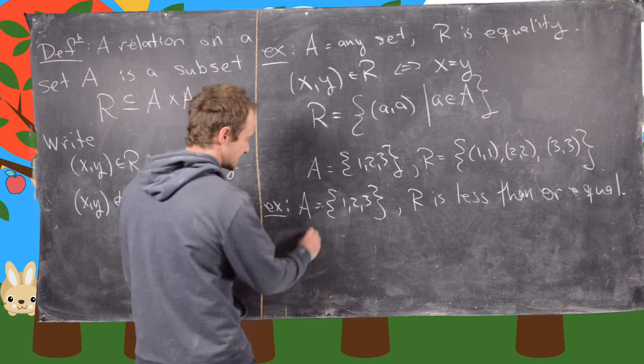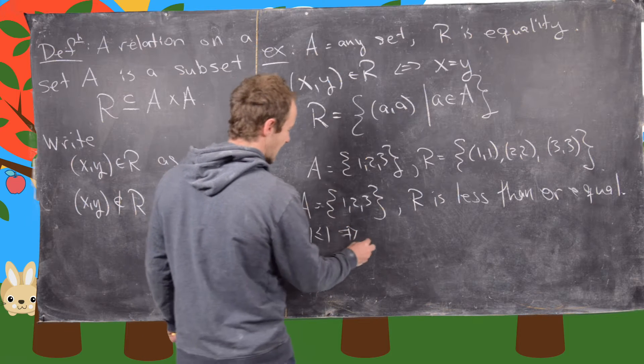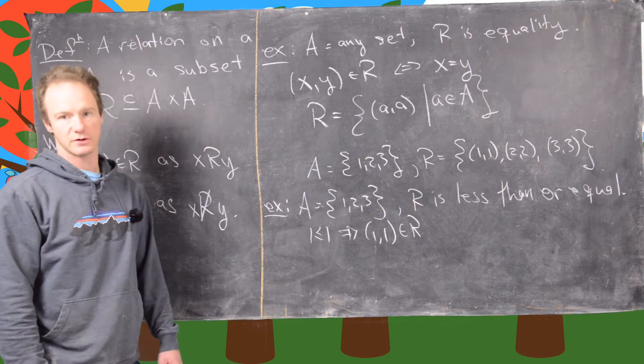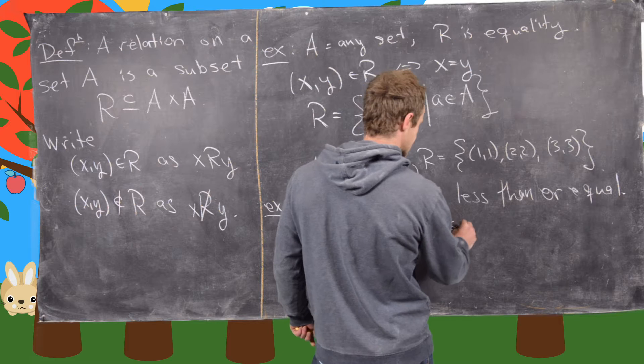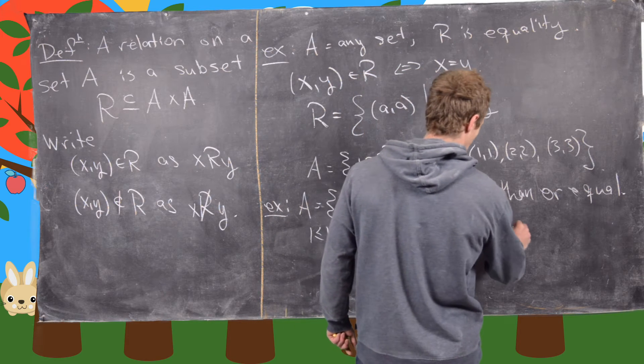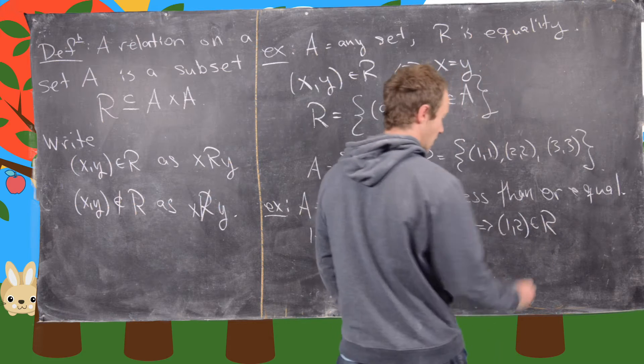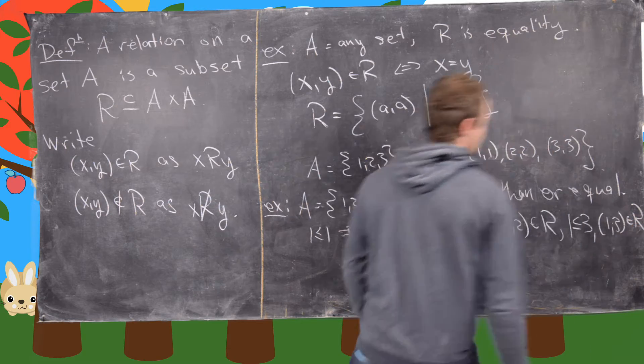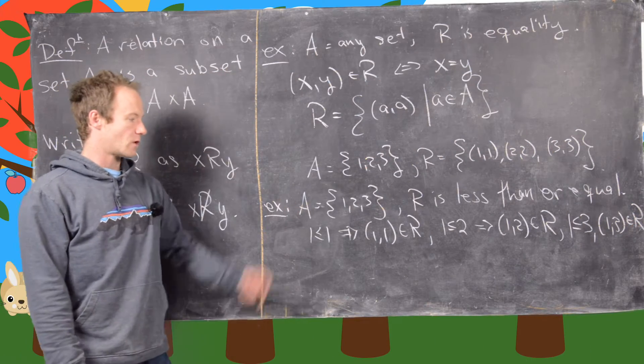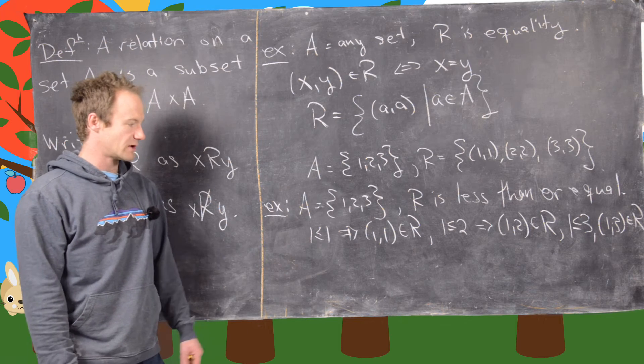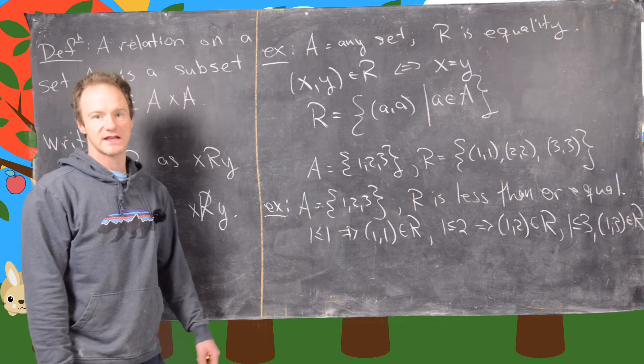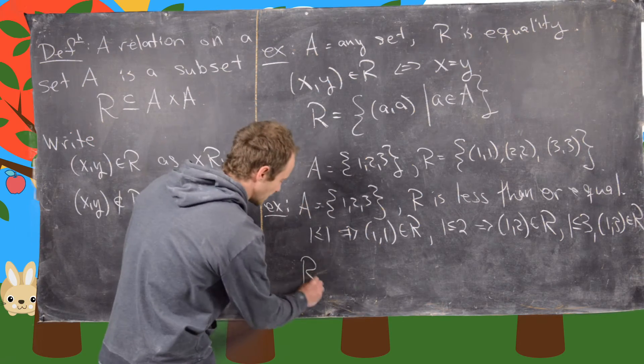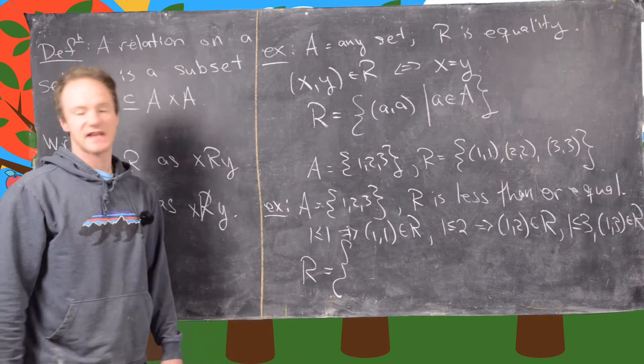So let's see. Notice that 1 is less than or equal to 1. So what that tells us is that 1 comma 1 is an element of this subset of A cross A, which we're calling R. 1 is less than or equal to 2, and so that tells us that 1 comma 2 is a subset of R. 1 is less than or equal to 3, that tells us that 1 comma 3 is in that subset R, and so on and so forth. So we could make a similar argument about 2 being less than or equal to 2, and 2 being less than or equal to 3.